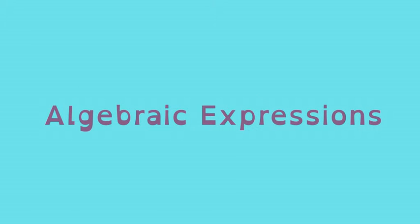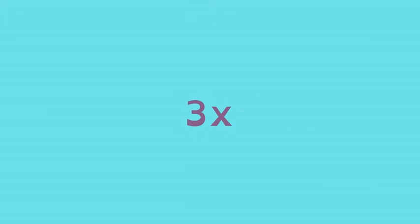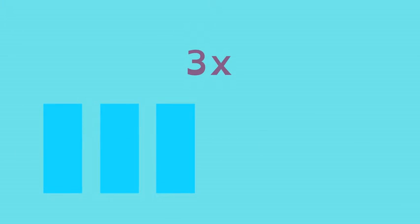The distributive property works with algebra too. Here we have 3 times x. We don't know what x is, but we know that there are 3 groups of them.